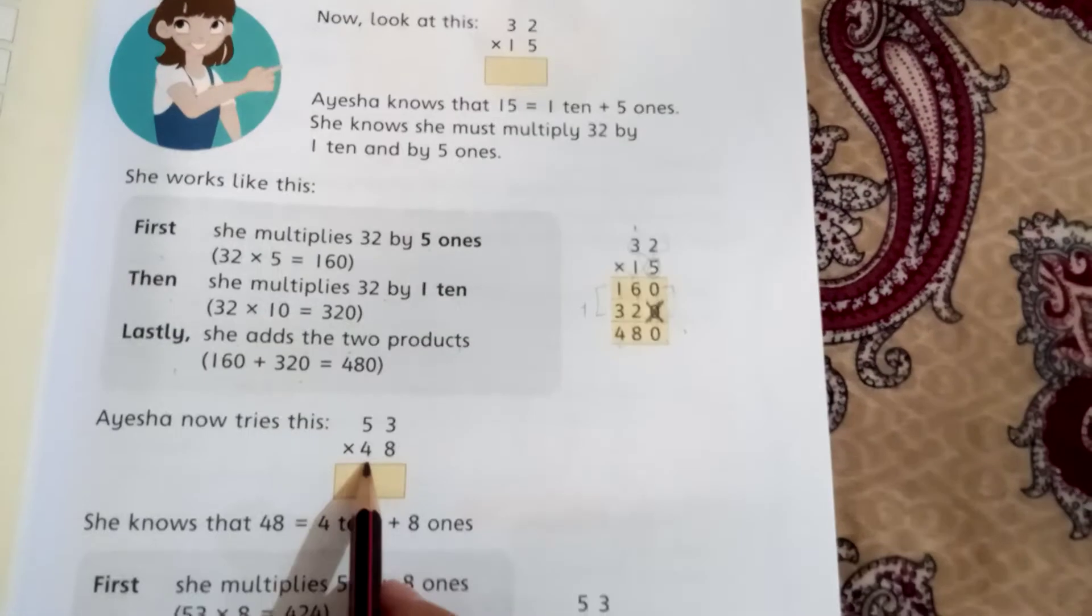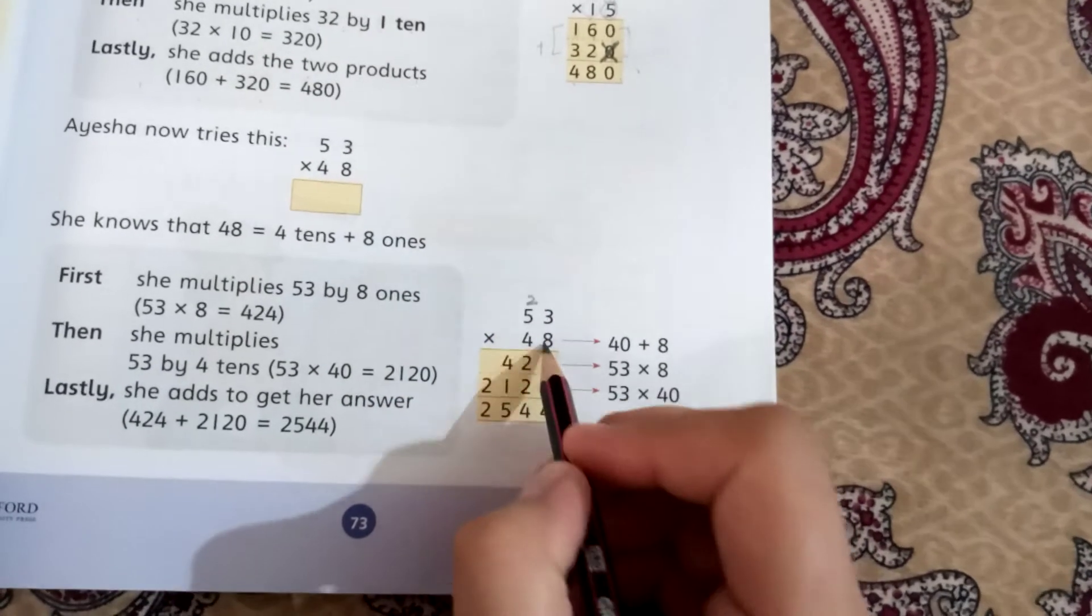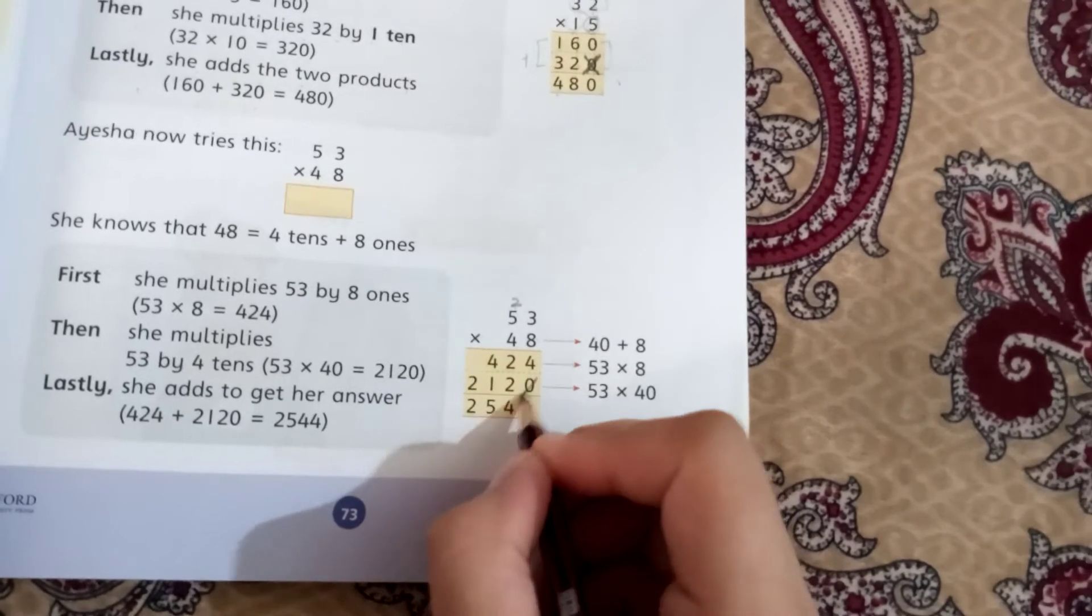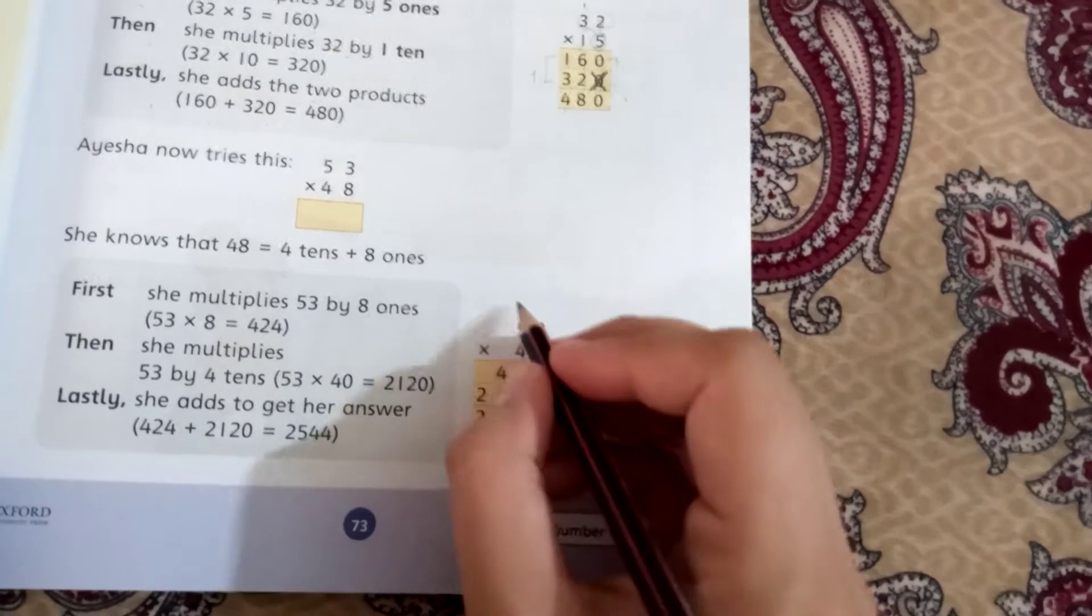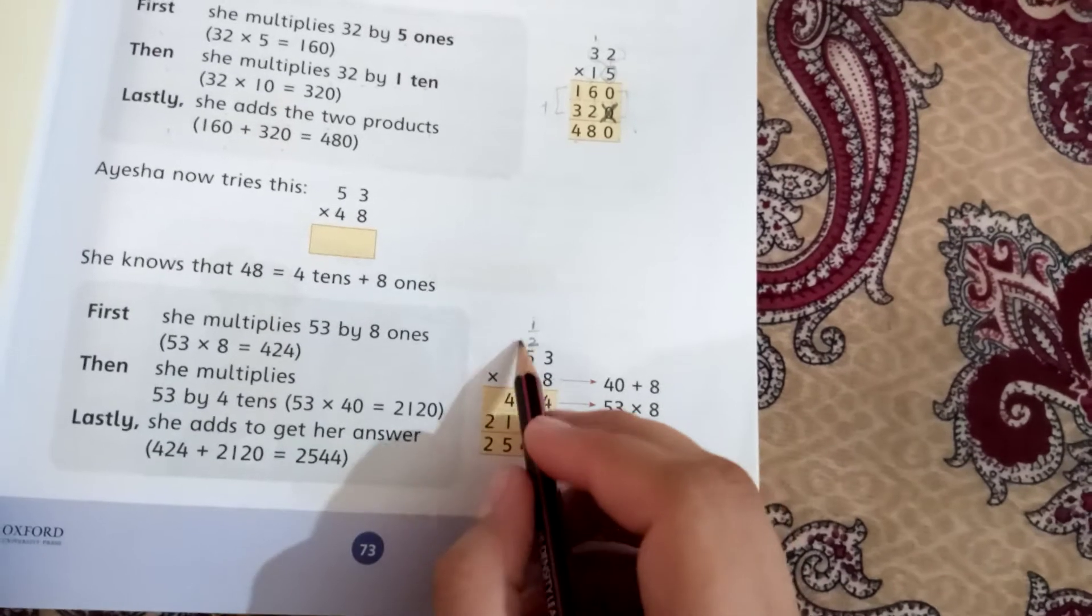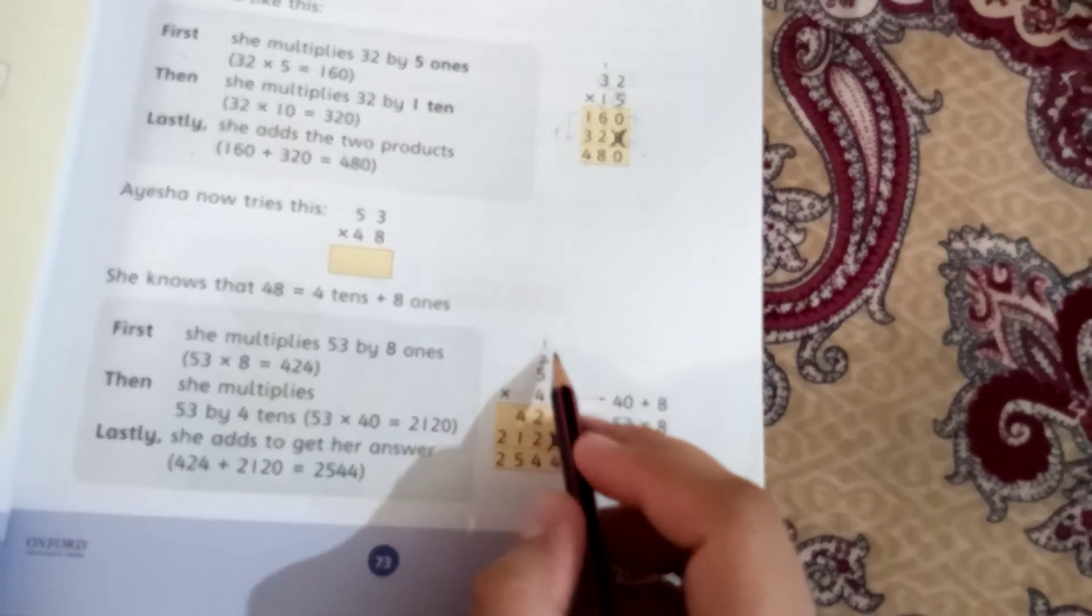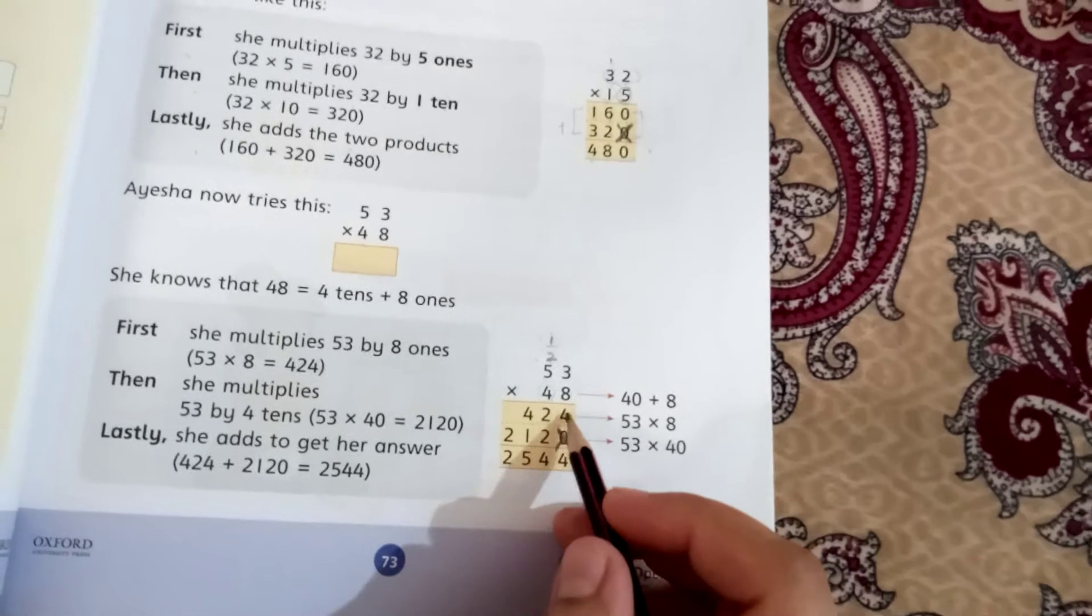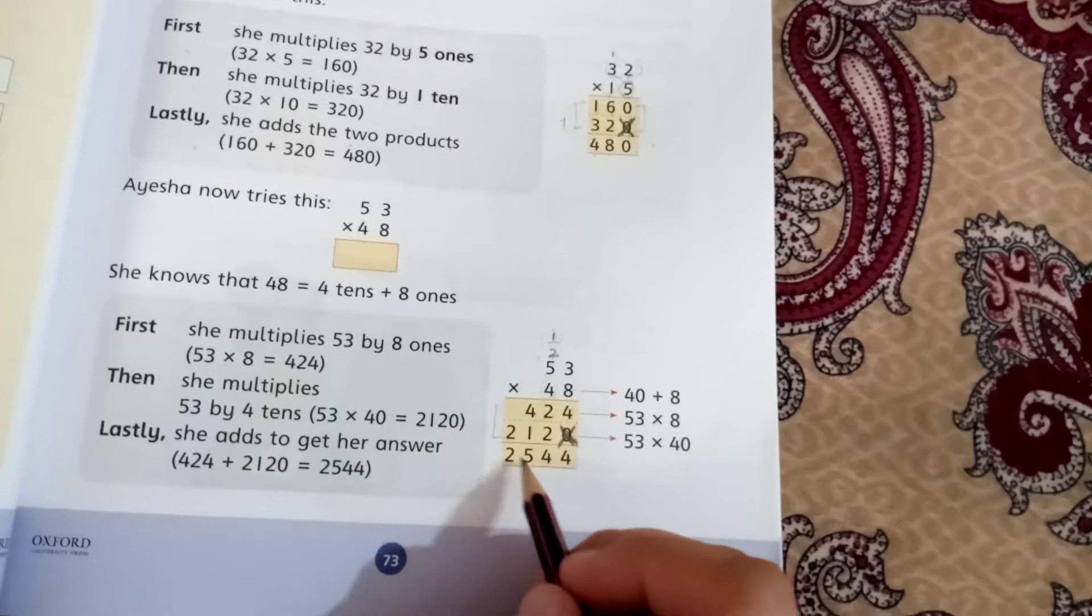Then after adding these numbers: 0 plus 0 is 0, 6 plus 2 is 8, 3 plus 1 is 4, so 480 is the answer. Next is 53 times 48. 8 times 3 is 24, write 4 and carry 2. 8 times 5 is 40 plus 2 is 42. Now put the 0 or cross.